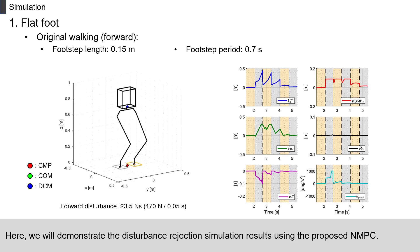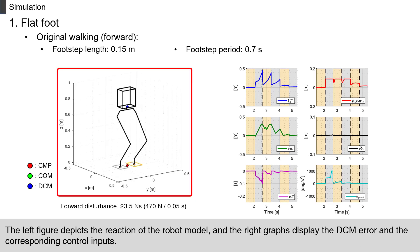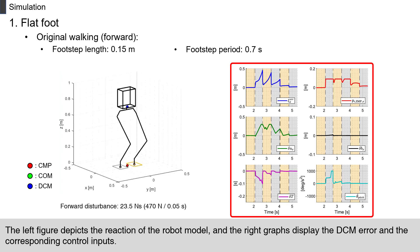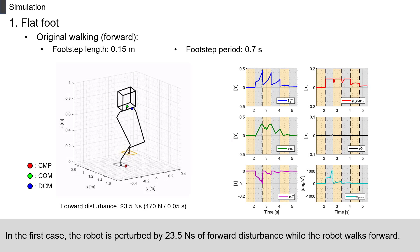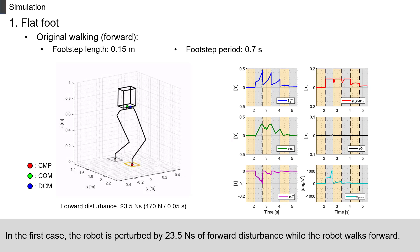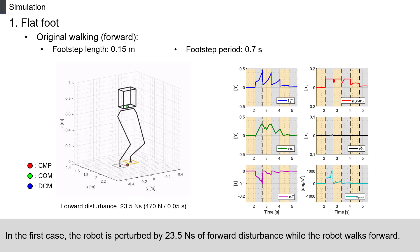Here, we will demonstrate the disturbance-rejection simulation results using the proposed NMPC. The left figure depicts the reaction of the robot model, and the right graphs display the DCM error and the corresponding control inputs. In the first case, the robot is perturbed by 23.5 Nm second of forward disturbance while the robot walks forward.